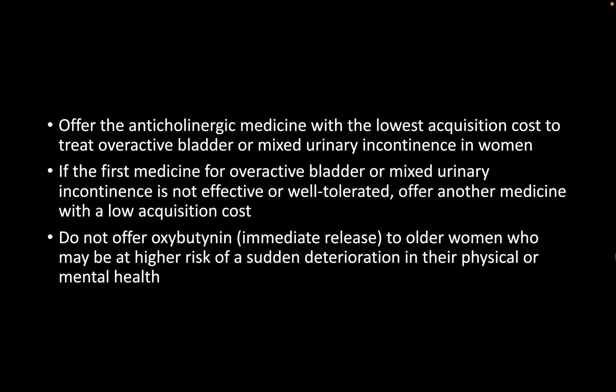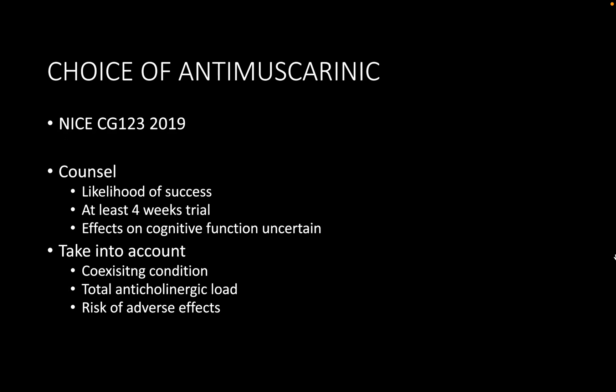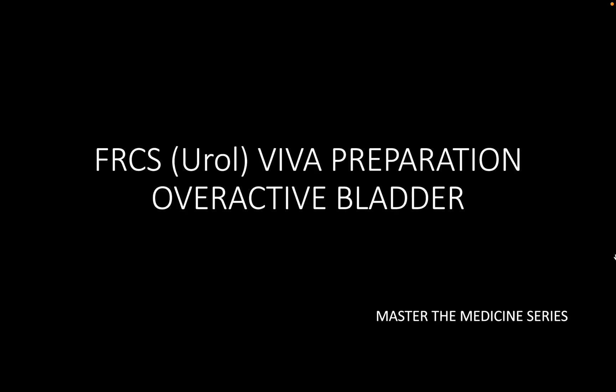In self-reflection, the trainee notes that points to improve on include the overactive bladder questionnaire details and how Kegel's exercises are performed. They would also modify their initial anticholinergic choice, noting that guidelines mention lowest acquisition cost, so they might start with oxybutynin or trospium and then move to others.